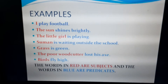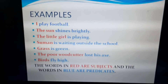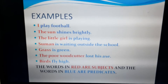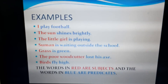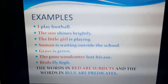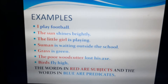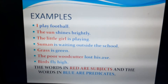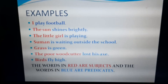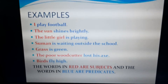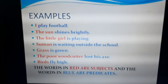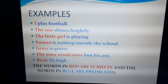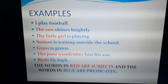I play football — the sentence is about I, so I will be the subject, and play football will be the predicate. The sun shines brightly — what shines brightly? The sun. So, the sun will be the subject, and shines brightly is the predicate.